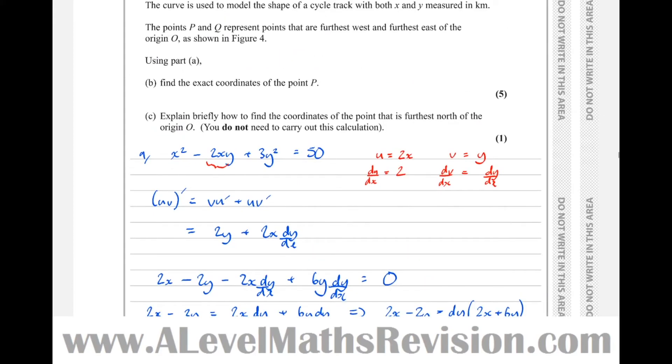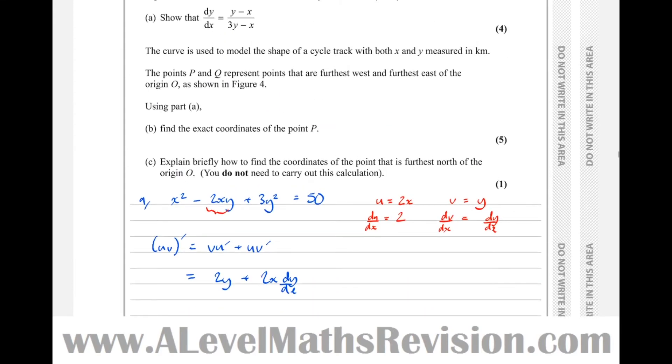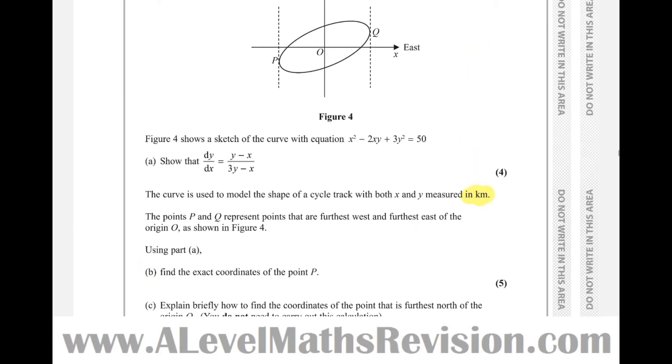Part B says the curve is used to model the shape of a cycle track with both x and y measured in kilometres. That's a key point that will come into play later. The points P and Q represent points that are furthest west and furthest east of the origin, as shown in figure 4. The significance of that - they're the points at which the gradient is infinite. When the gradient's infinite, dx by dy equals 0. So P and Q, dx by dy equals 0. These are vertical tangents.